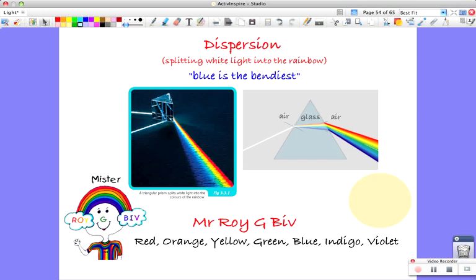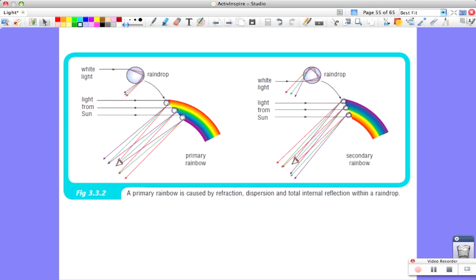Now, rainbows actually happen in the sky. It's the same process, though: you have white light entering, going from air not to glass but to water. It refracts and disperses within the water, and then there's some total internal reflection as well.